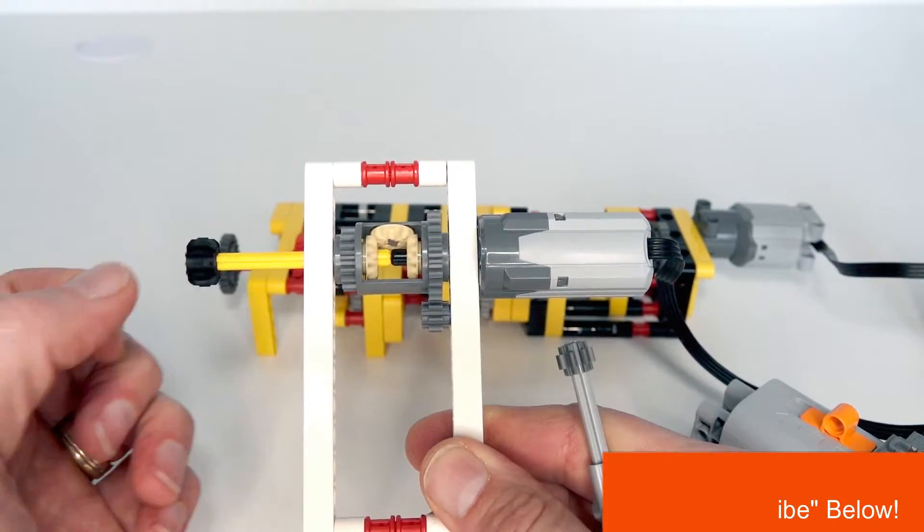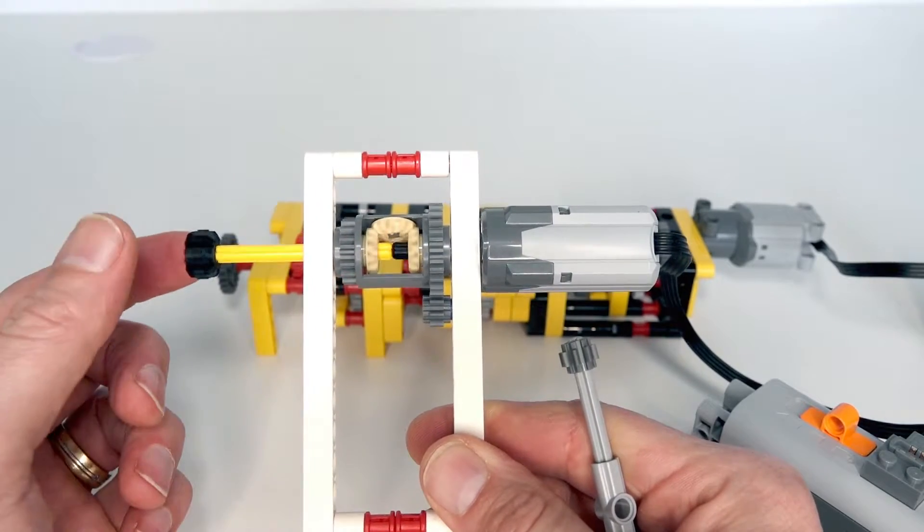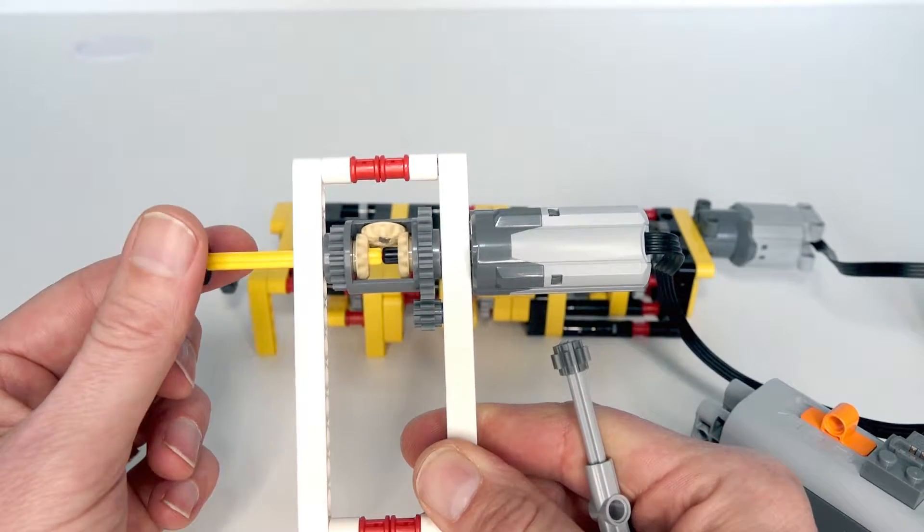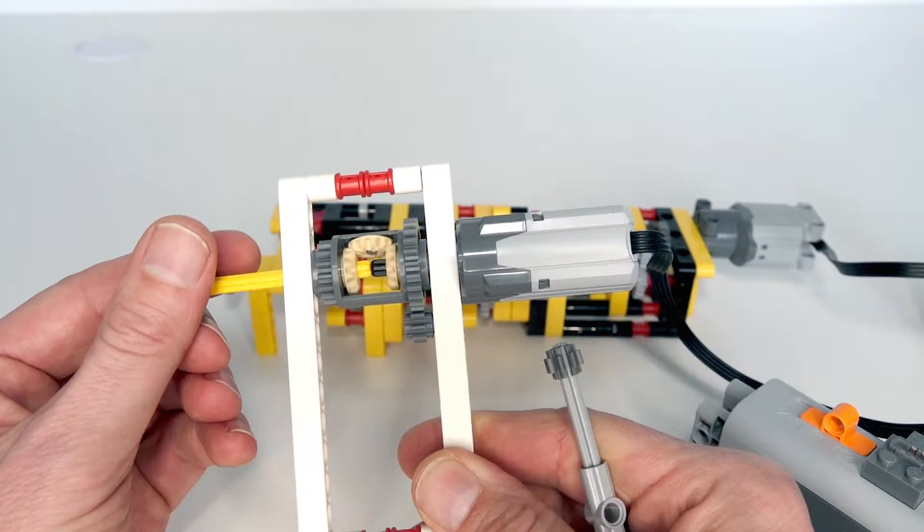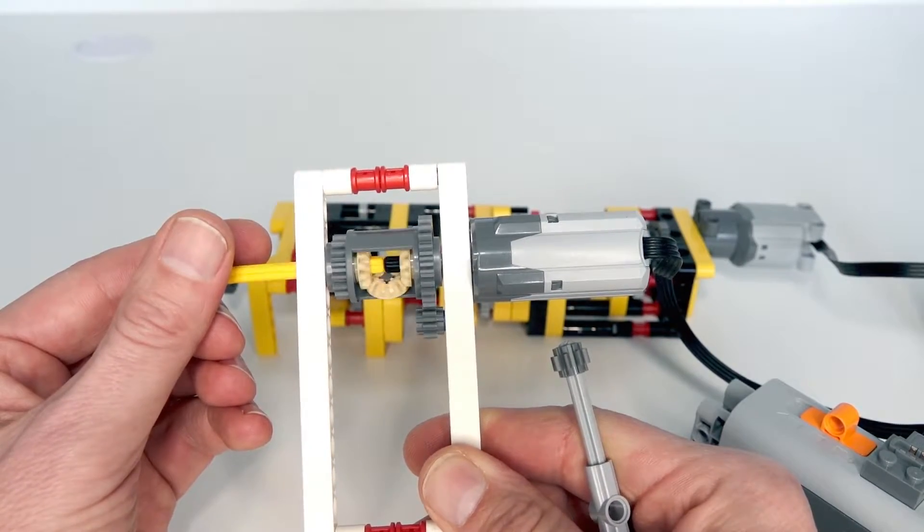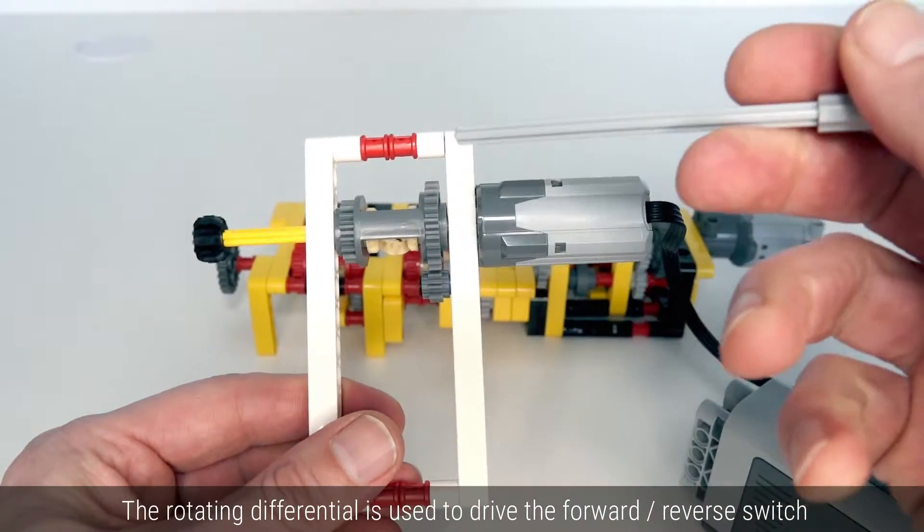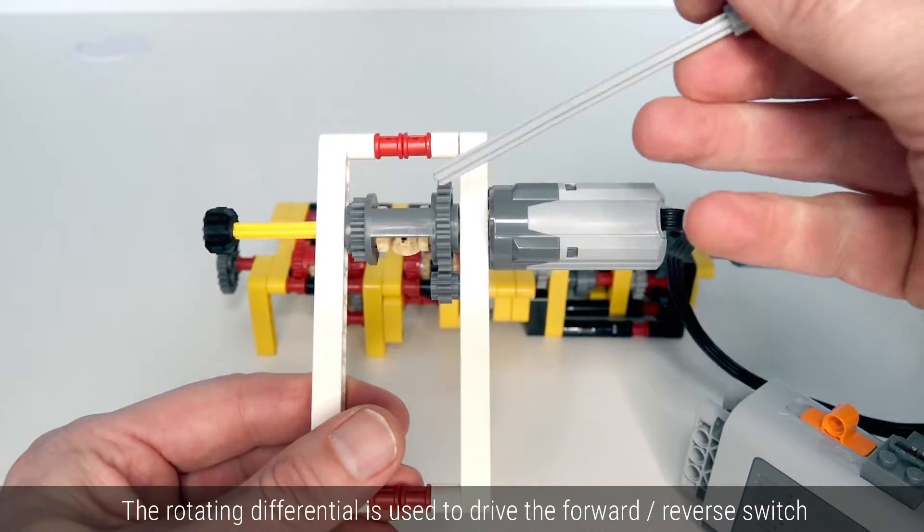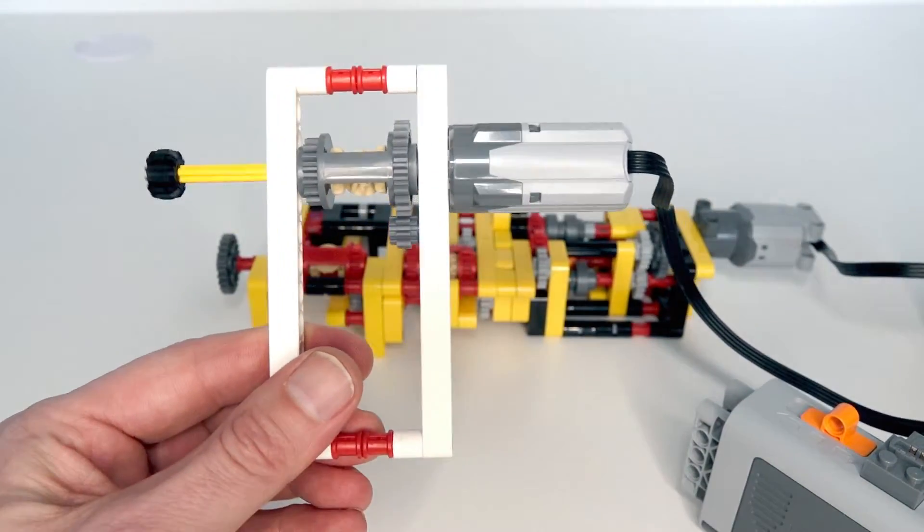Without any load, pretty much the entire output's going to this axle. But as soon as you put some load on it, the differential starts turning. And what that means is we can use that to react to the output load and use that turning to switch the gearbox.